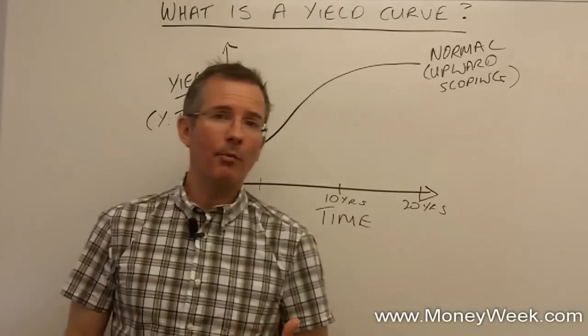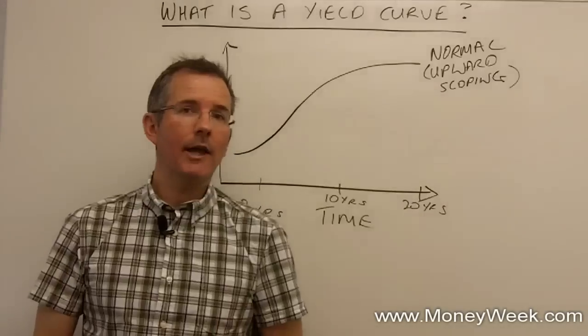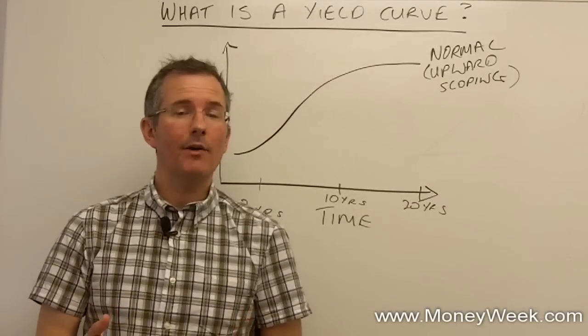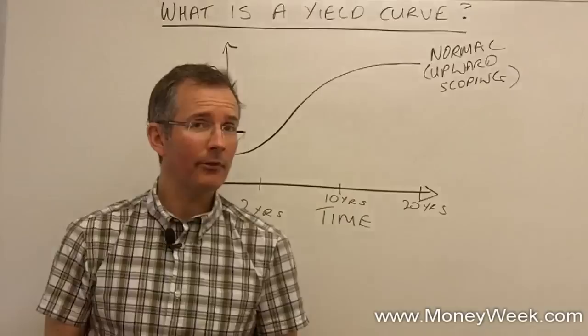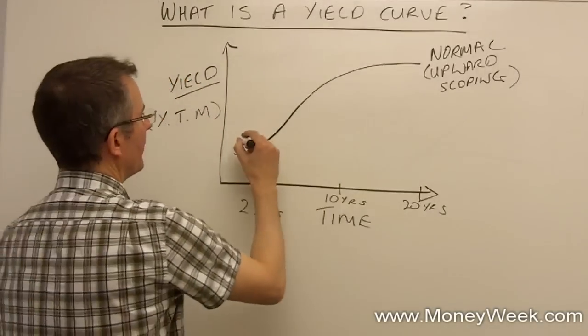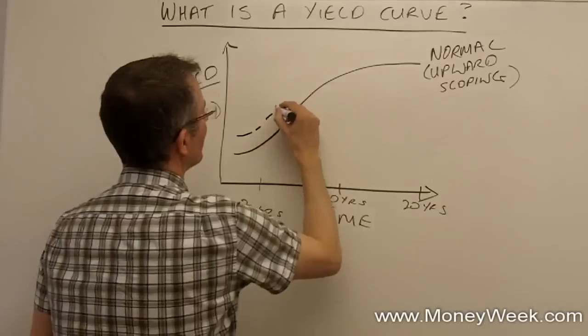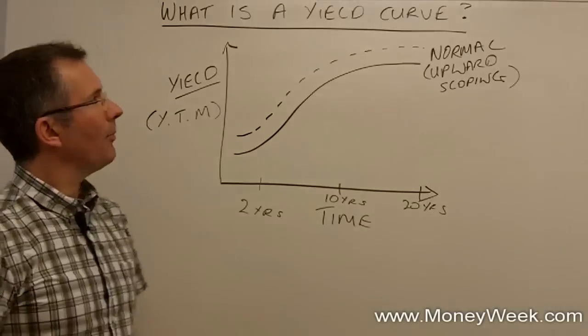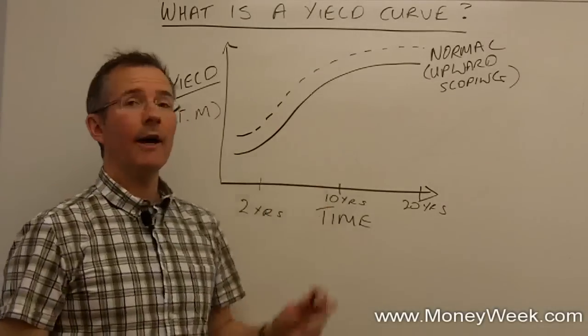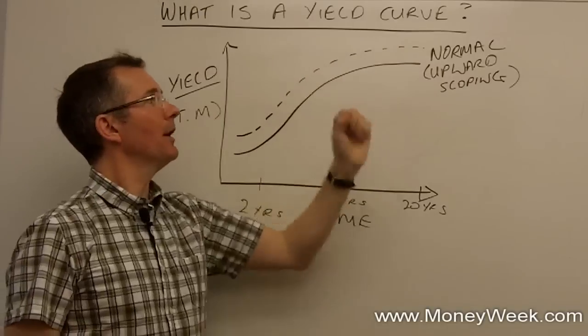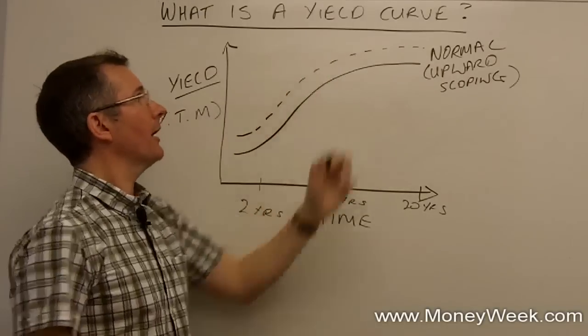Now, you'd normally expect the yield on a corporate bond to be that little bit higher. There is some default risk there. For example, take a Tesco or even an HSBC. They're probably not going to go bust, but they might. So if you were to plot, say, corporate bonds over the top, you might find the line is slightly higher. Wouldn't necessarily be exactly like that as a sort of mirror image, but you get the idea. The line might be slightly higher.